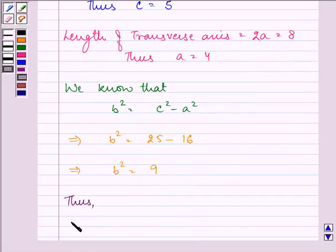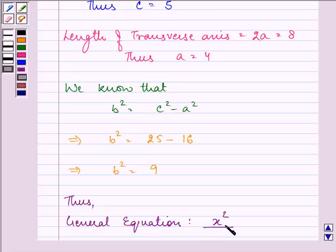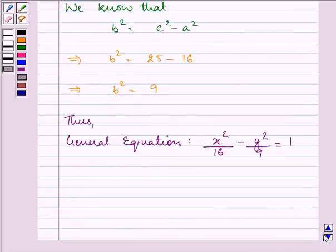Thus the general equation of the hyperbola is x square by a square, where a is 4, so a square will be 16, minus y square by b square, that is 9, is equal to 1.